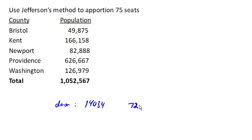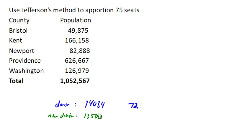So we're really going to need to adjust this. Our new divisor — let's see, we need to make it smaller — let's try 13,500. Using our new divisor, we can divide each population by that divisor and come up with our new quotas.